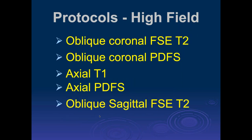The protocol we use here for high field — we have a bunch of musculoskeletal radiologists and not a single one was happy with this protocol, but they're all willing to accept it. We do an oblique coronal fast spin echo T2 (not fat suppressed), oblique coronal PD fat sat, axial T1, axial PD fat sat, and an oblique sagittal T2 sequence. Some people like fat suppressed sagittal T2s, and for some orthopedic surgeons we'll do both the T2 and a PD fat sat, though generally it's not necessary.